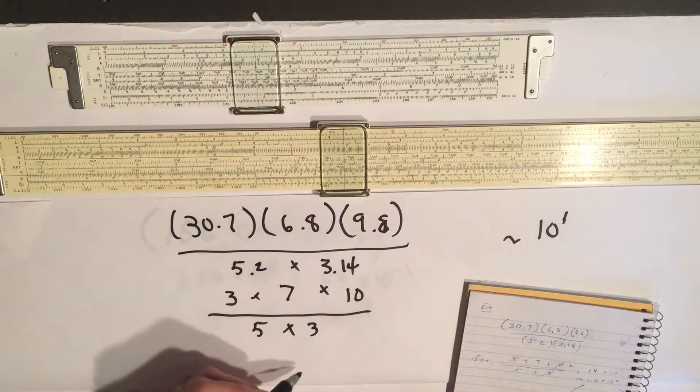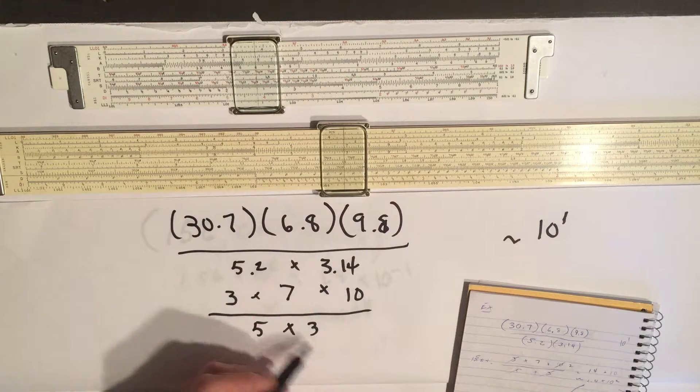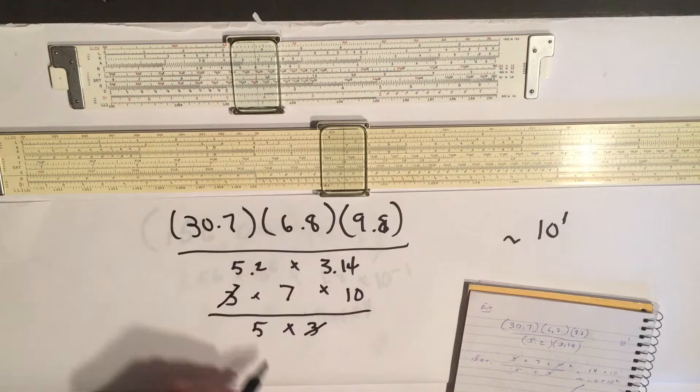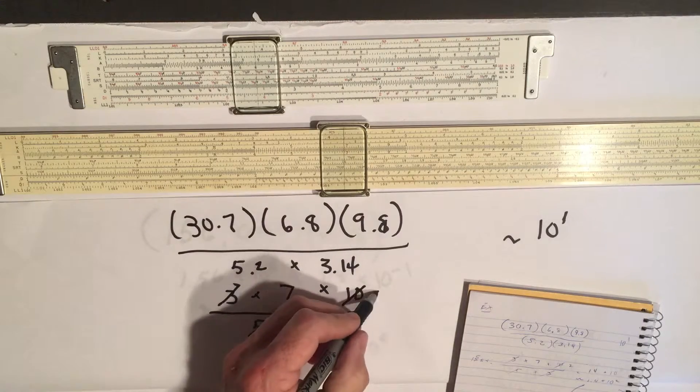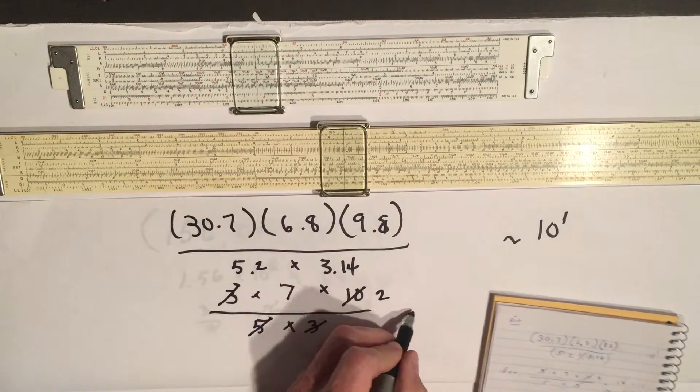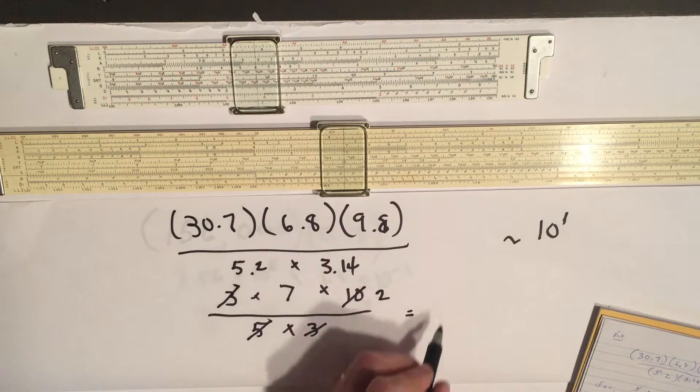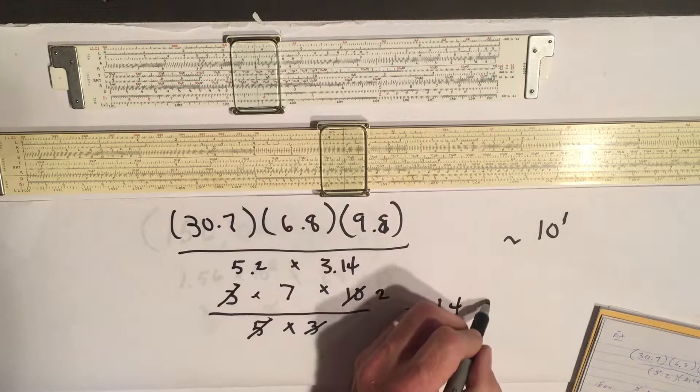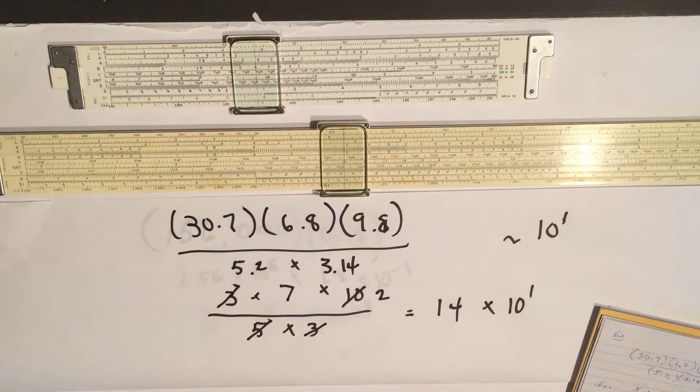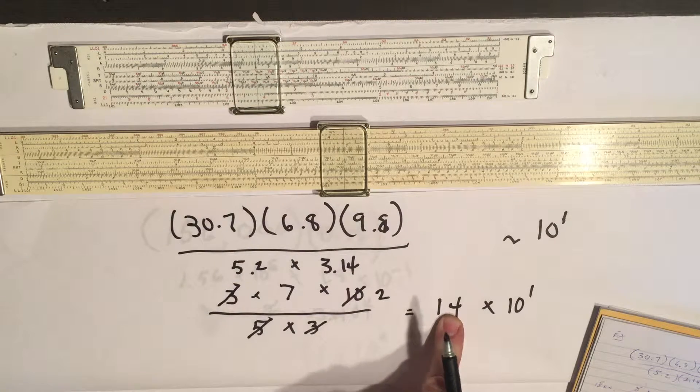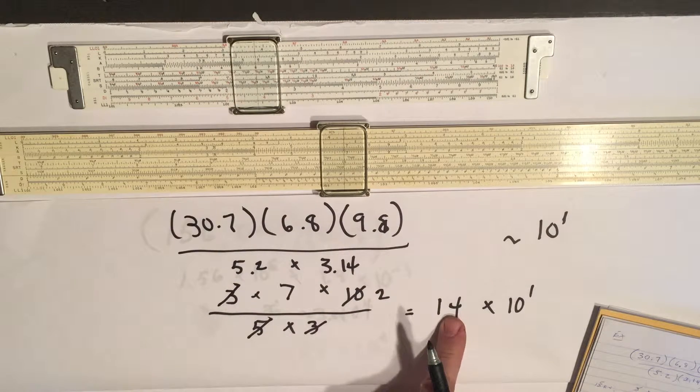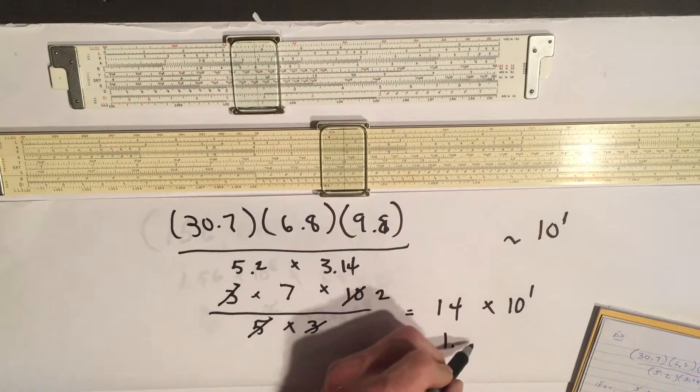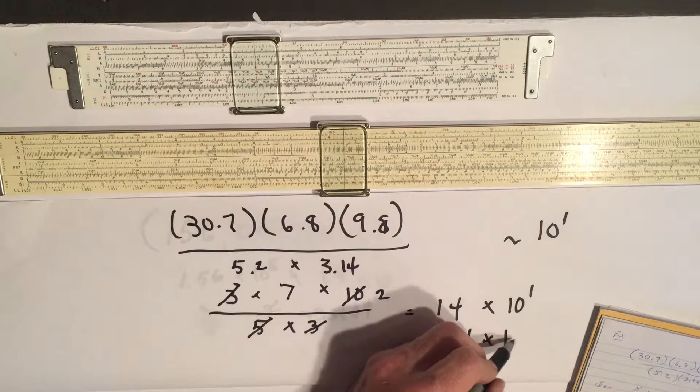Let's see what cancels out here. Well, we've got 3s cancel easy, 5 goes into 10 two times. So now we've got our guesstimate here for just using the single digits is 14 times 10 to the 1. Make sure that you realize you've got an extra decimal place here, so really that's 1.4 times 10 to the 2.